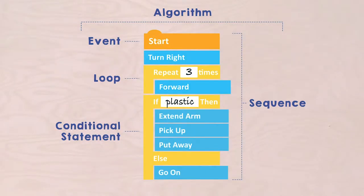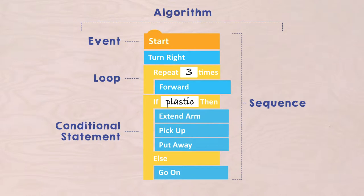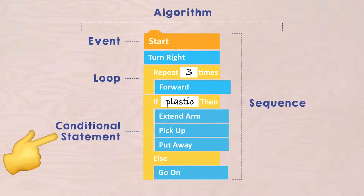Hey there! In the previous mission, you discovered that an algorithm is a step-by-step plan to solve a problem. Such an algorithm starts with an event. A series of steps within such an algorithm is called a sequence. A sequence can contain loops — pieces that are repeated a number of times — and conditional statements: if, then, or else blocks.